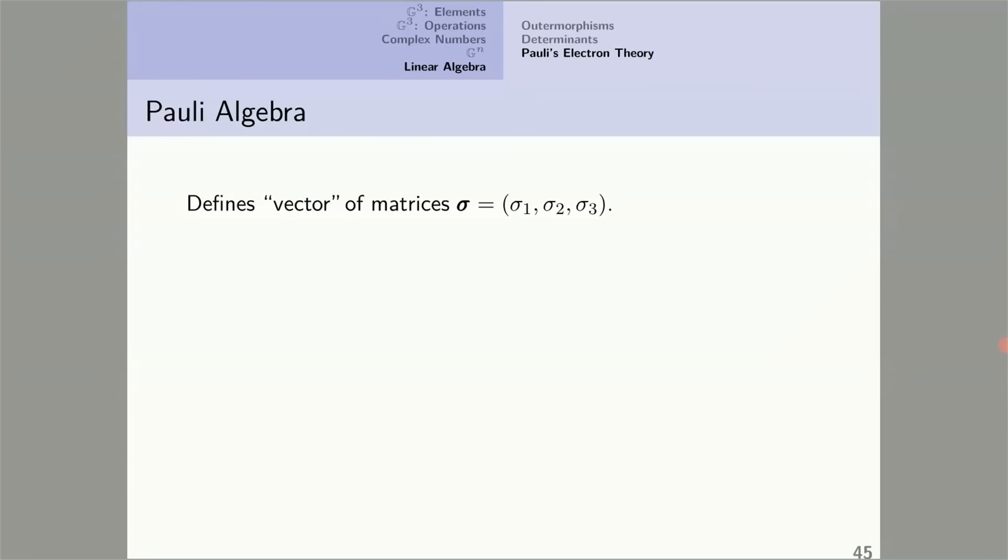The Pauli algebra defines a vector of matrices, bold sigma, with the three two-by-two Pauli matrices as its elements. Given a vector u, with coefficients u1, u2, and u3, it associates a matrix, sigma dot u: u1 sigma_1, u2 sigma_2, u3 sigma_3, a rather natural notation, sigma dot u.